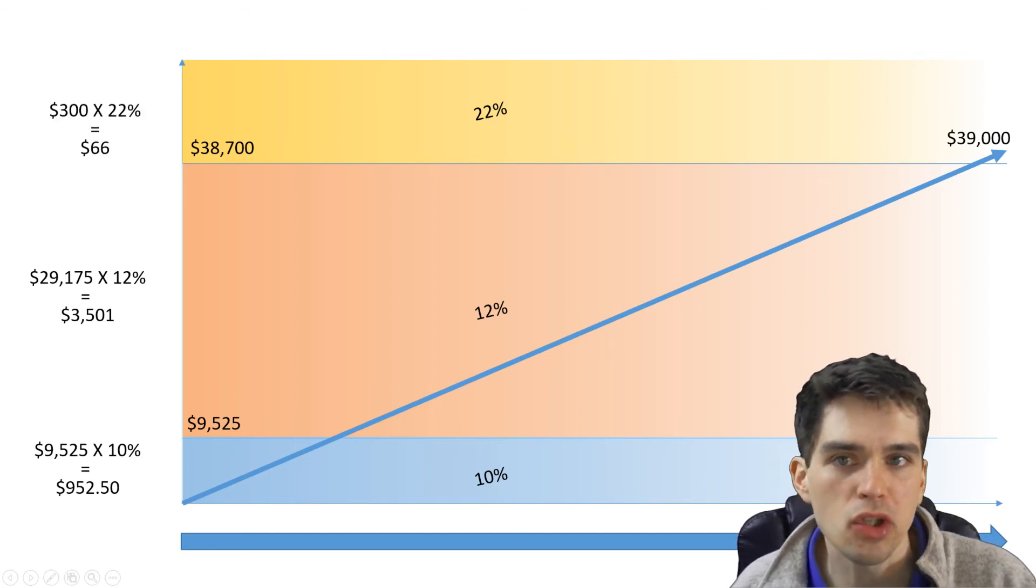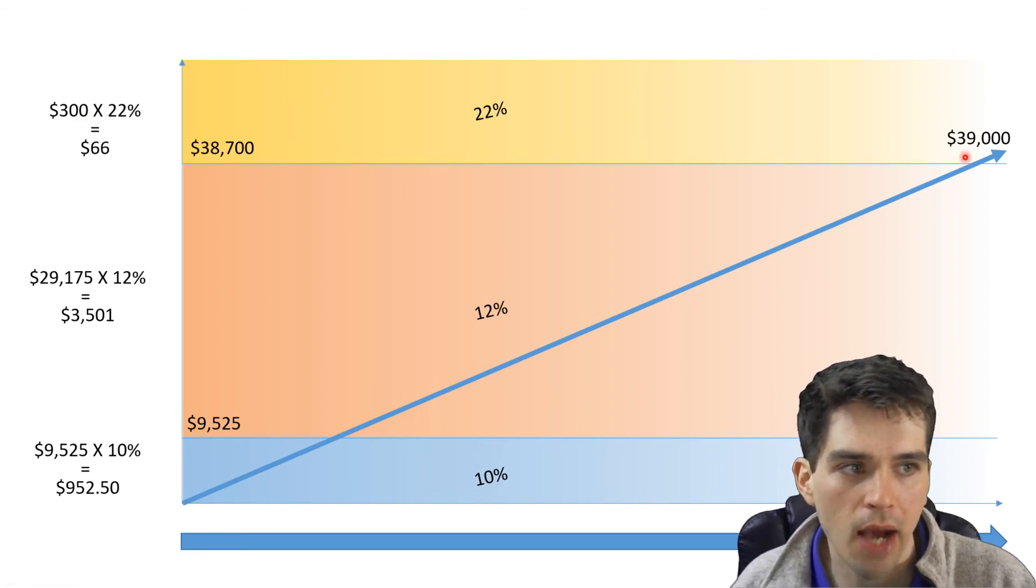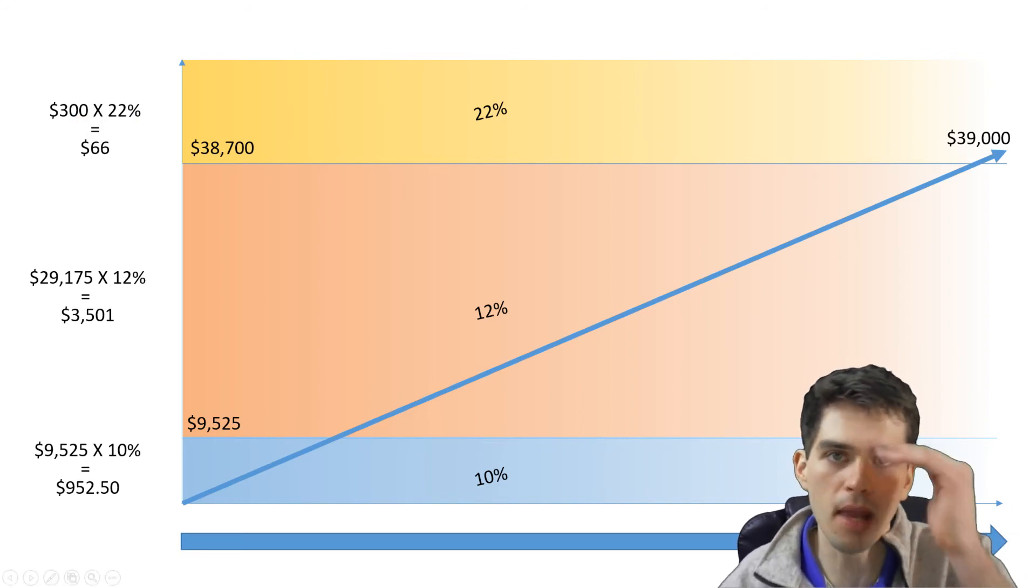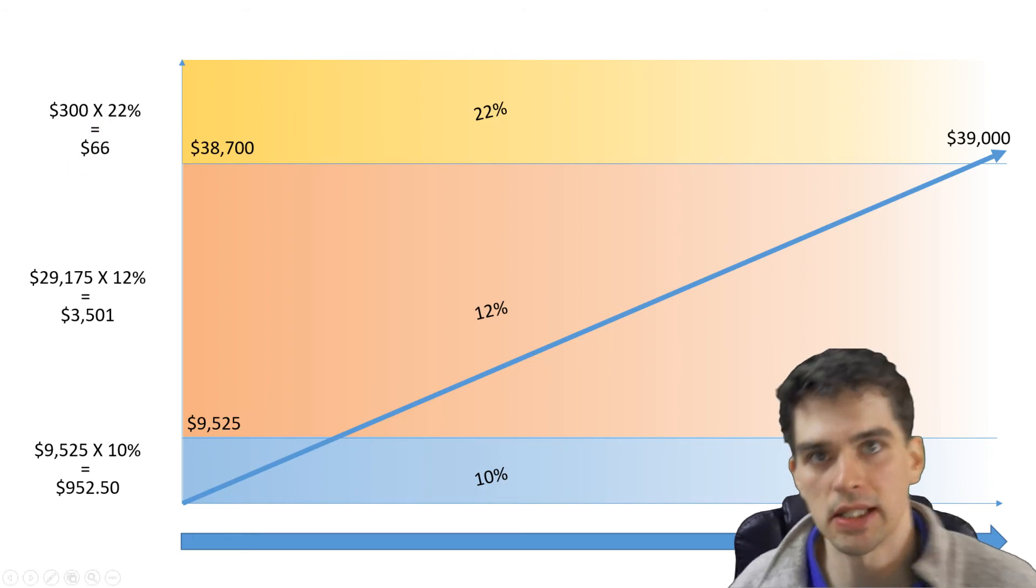You're only taxed 22% on the $300, the difference between $38,700 and how much you actually made. That $300 you made above the tax bracket is the only money that's taxed at 22%, which comes out to just 66 measly dollars.